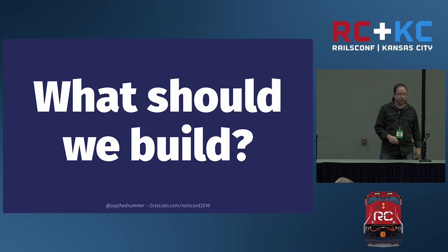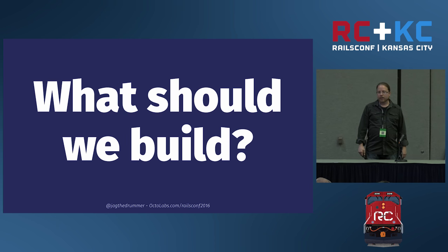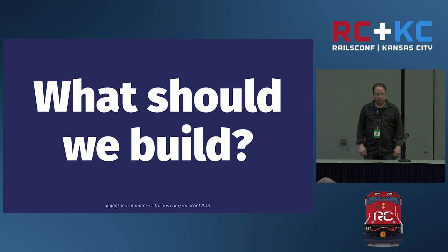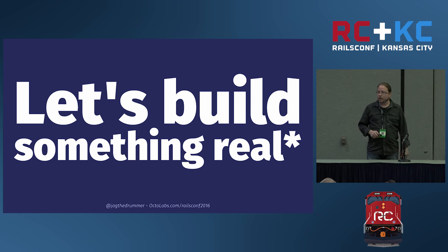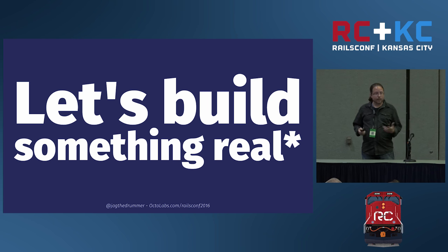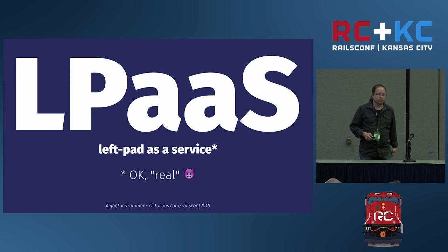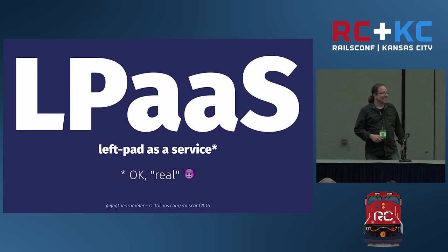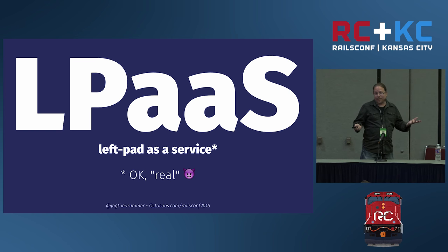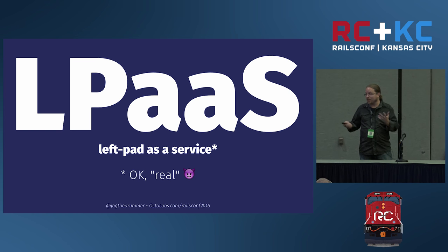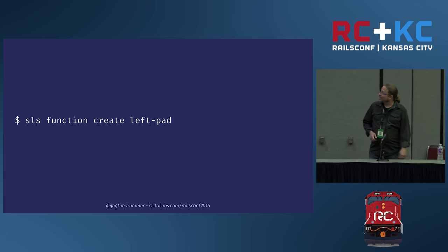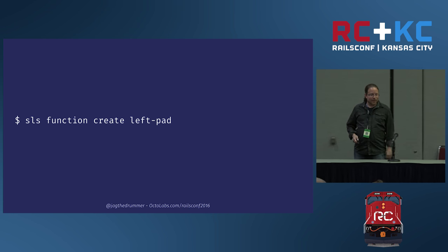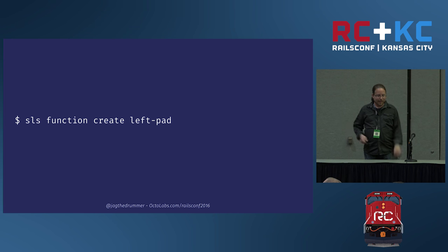If you go into the directory created for the new project, you'll see a tree that looks roughly like config.ru and config/application.rb in the Rails world — just bootstrap boilerplate to get the thing running that you probably don't care about until you need to customize it. So let's build something that actually does something, not just a stupid hello world application. There's an NPM module for left-pad, right? So that means it must be useful enough to be a service.